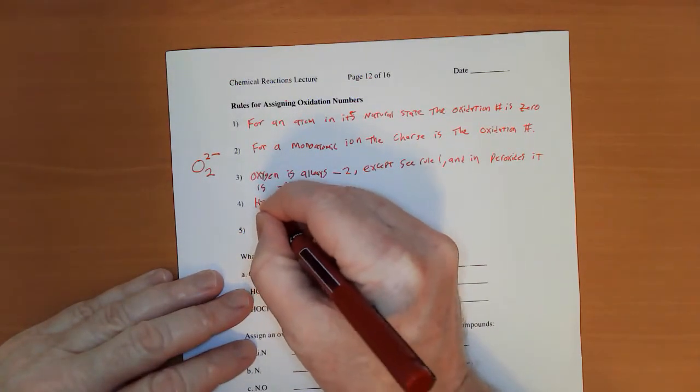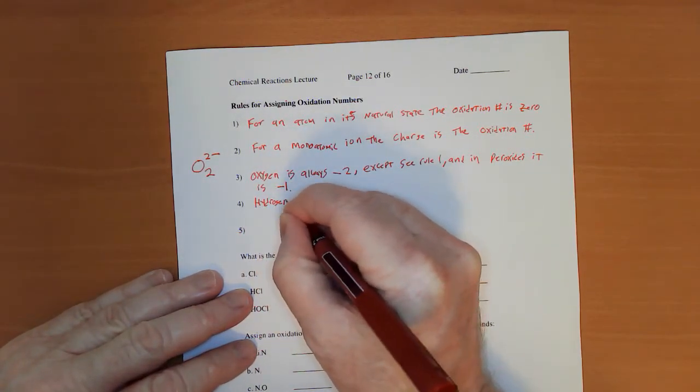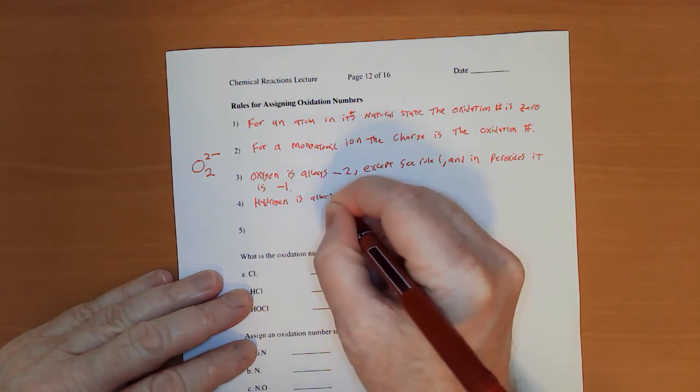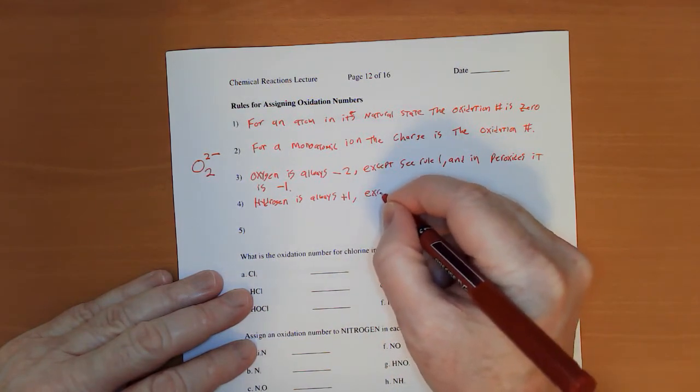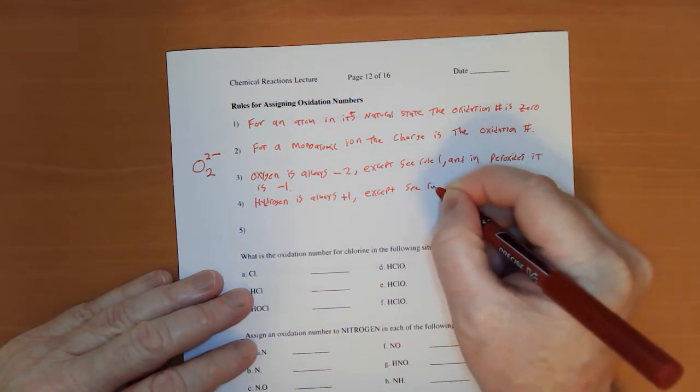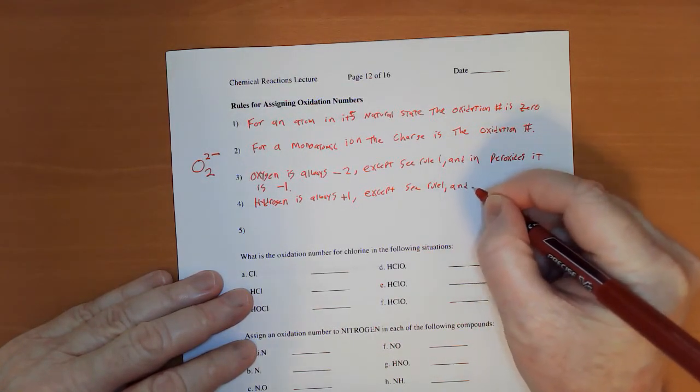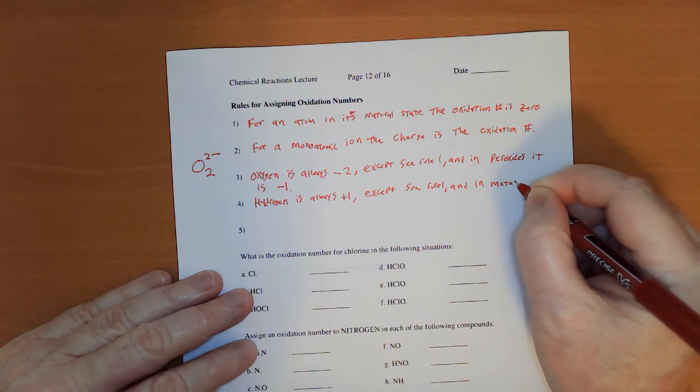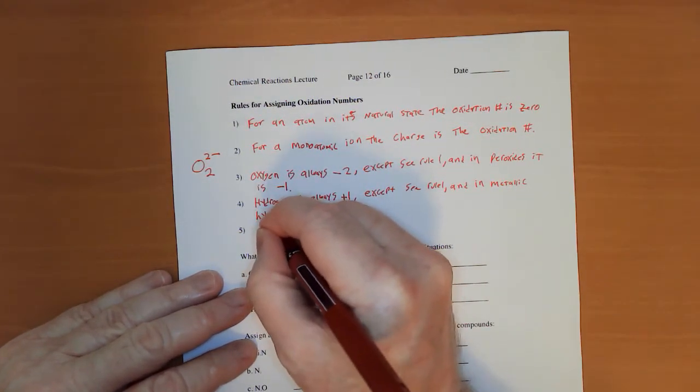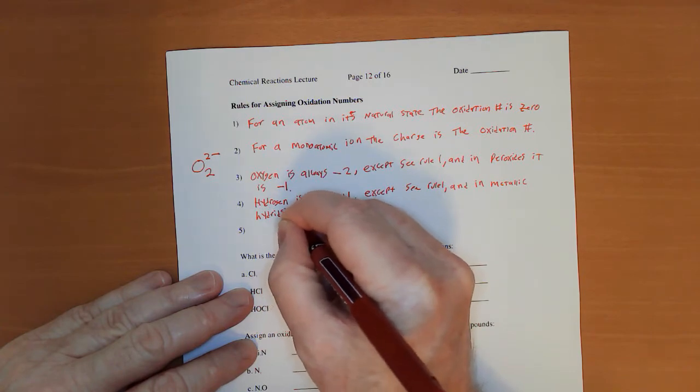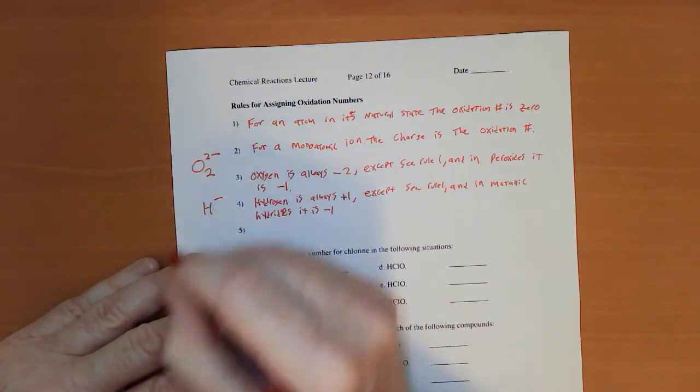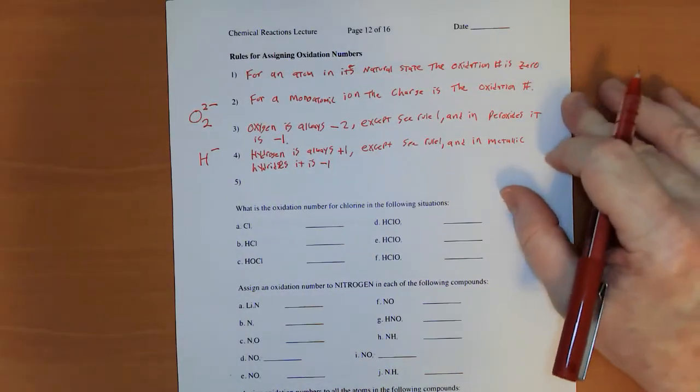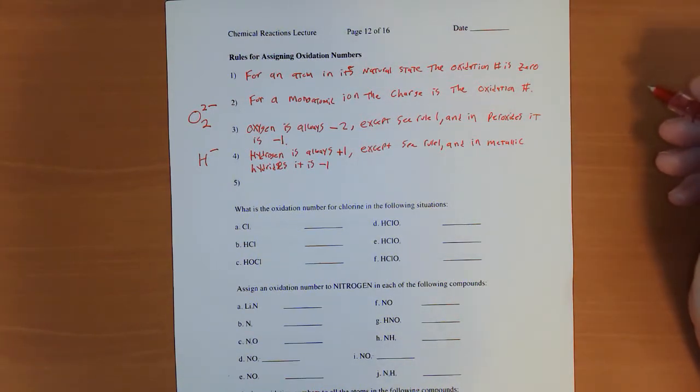Rule four. Hydrogen is always positive one except see rule one and in metallic hydride it is negative one. So the hydride ion, which is in your stack of polyatomic ions, H minus. Recognize those because it will always be attached to a metal like sodium.